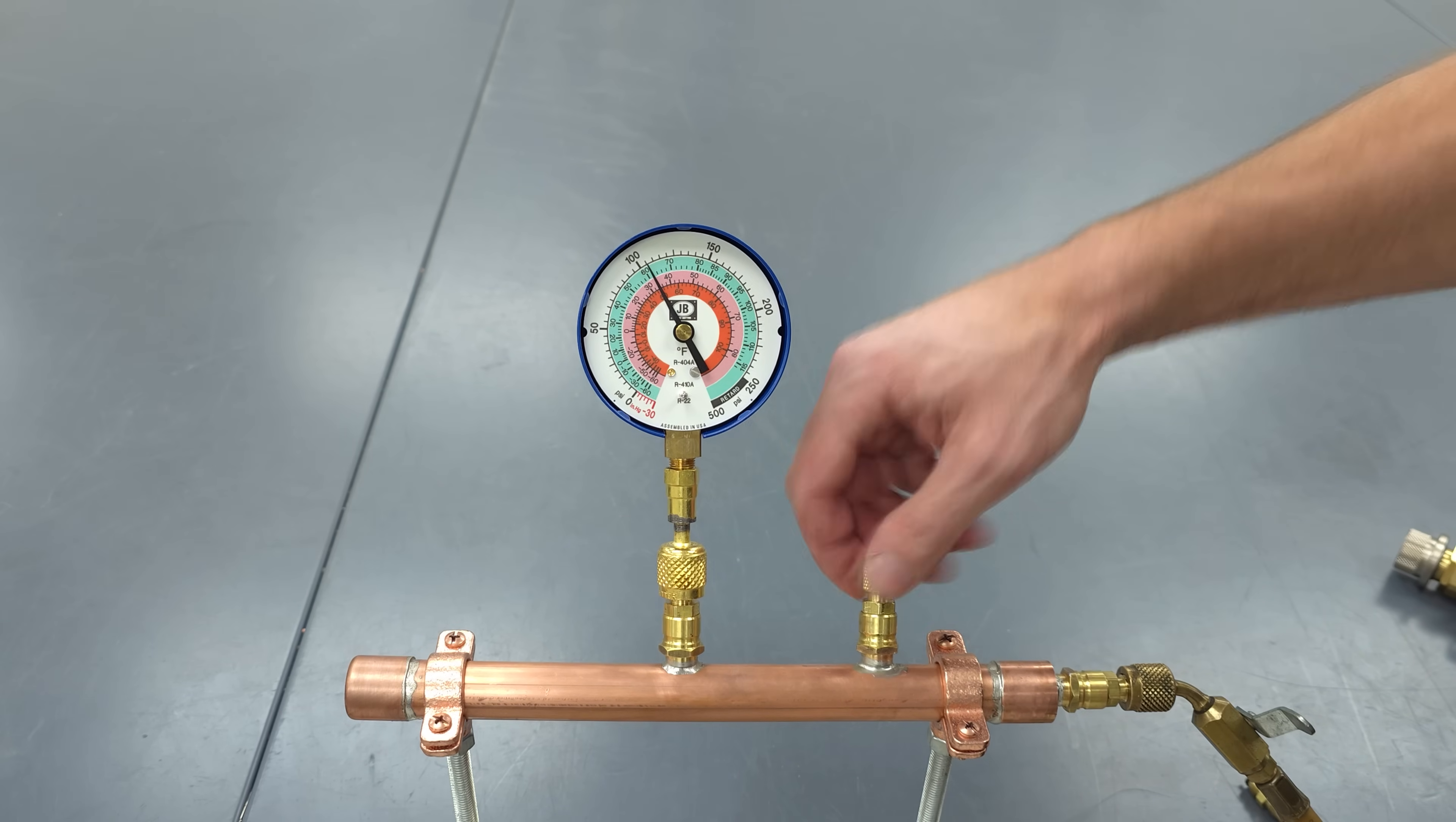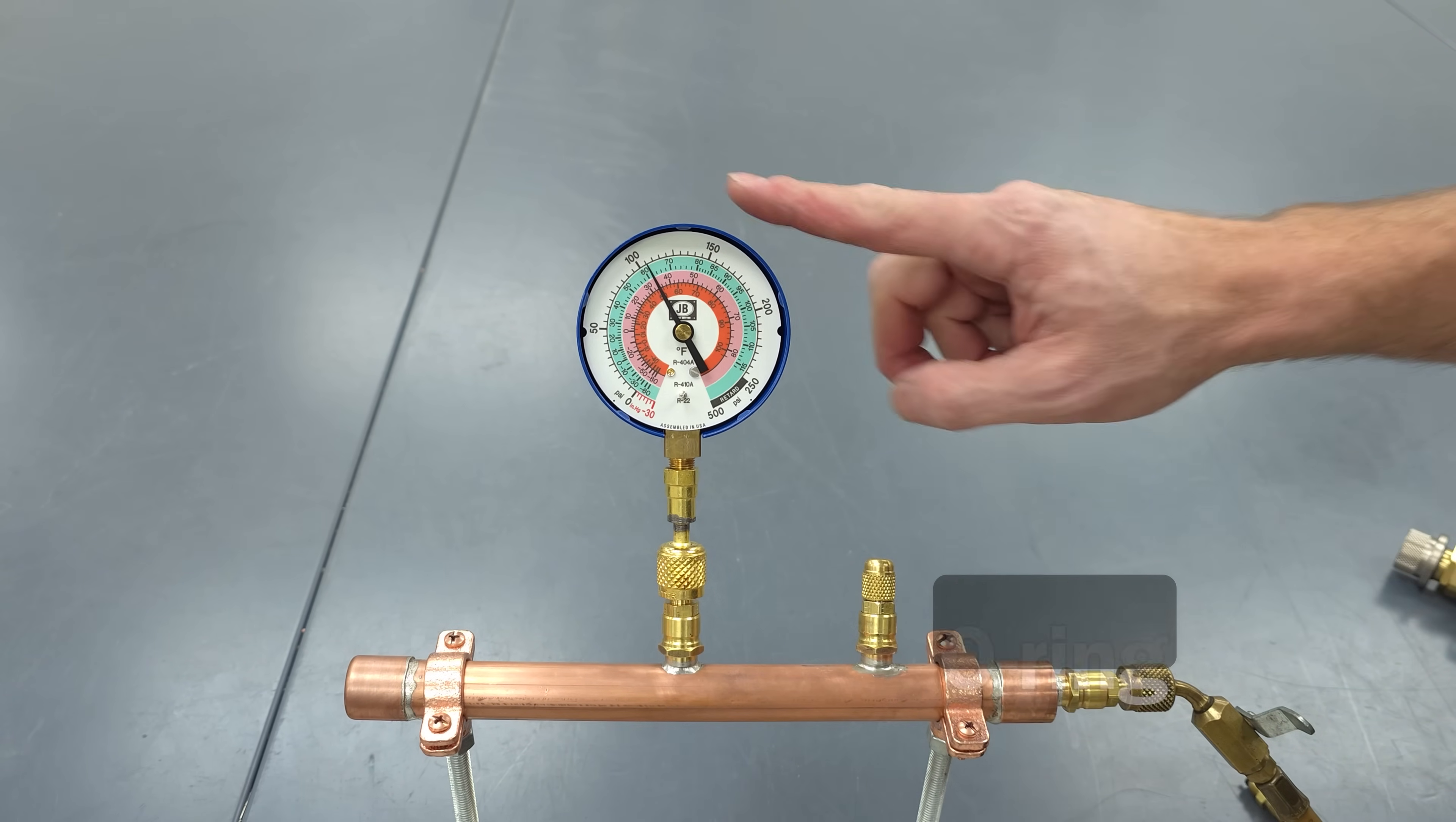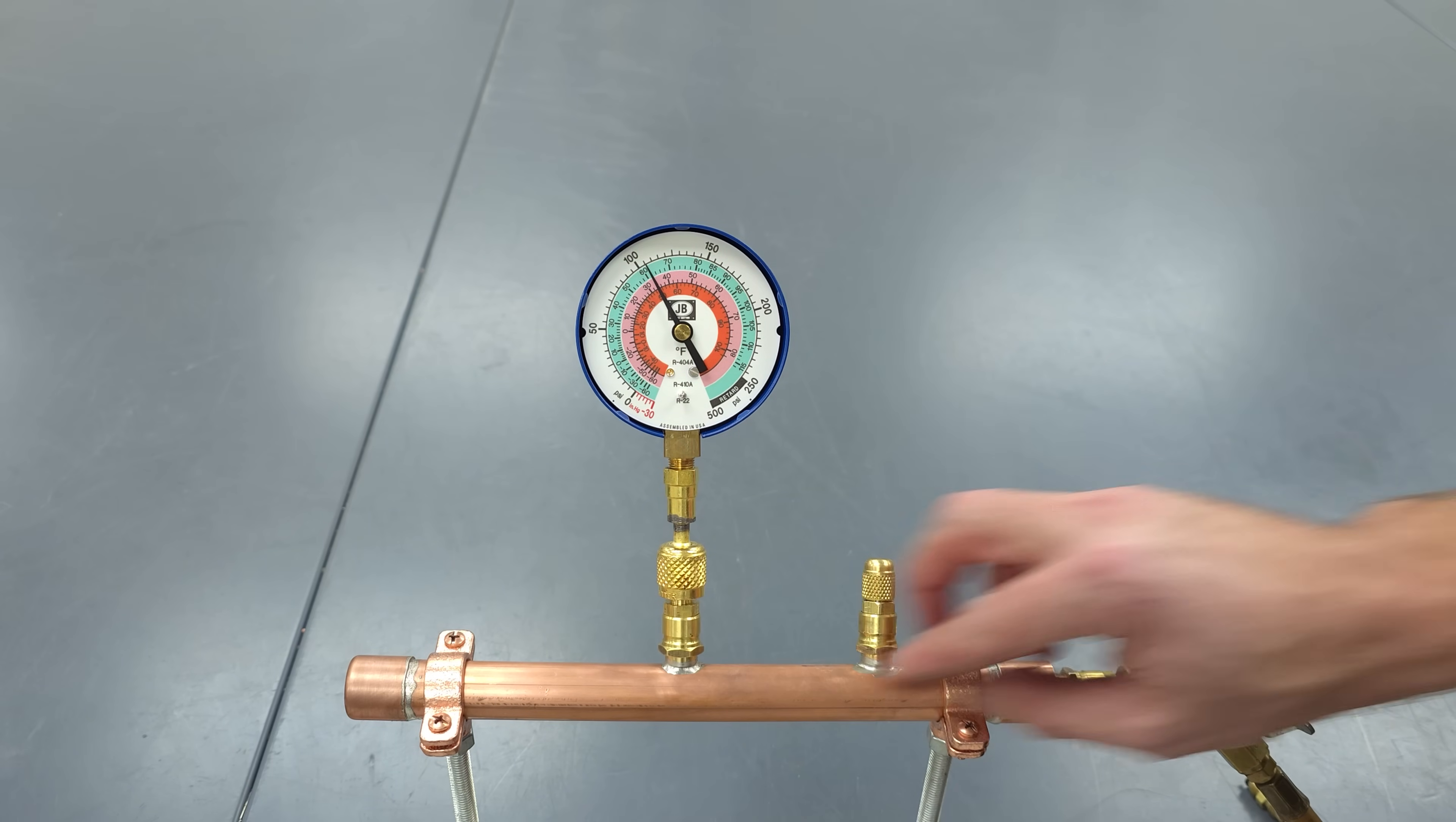After that's done we just go ahead and place our cap, make sure we have an o-ring in it and that's it. Now you see that we did lose pressure but that's just because this is a small piping assembly.